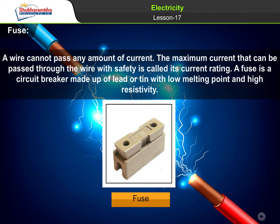Fuse: A wire cannot pass any amount of current. The maximum current that can be passed through a wire safely is called its current rating. A fuse is a circuit breaker made up of lead or tin with a low melting point and high resistivity.